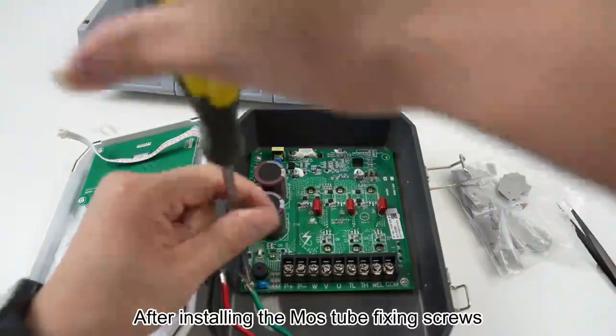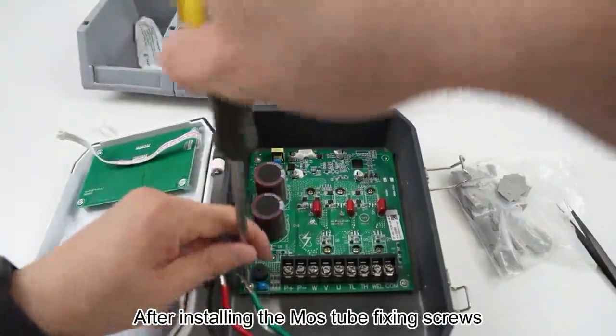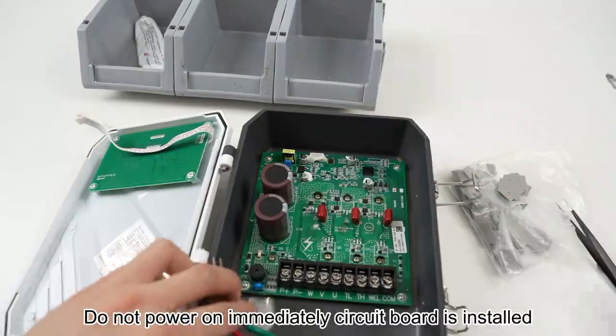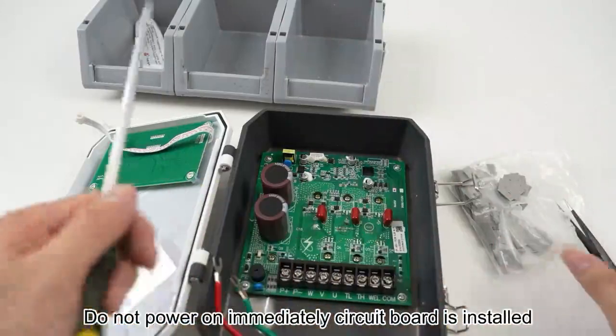After installing the MOS tube fixing screws, fasten the remaining two outside screws. Do not power on immediately after the circuit board is installed.